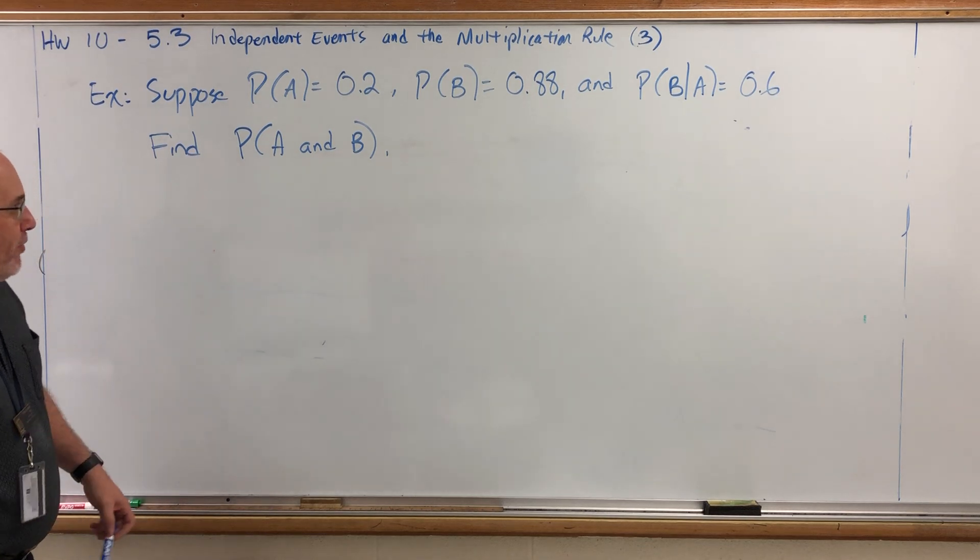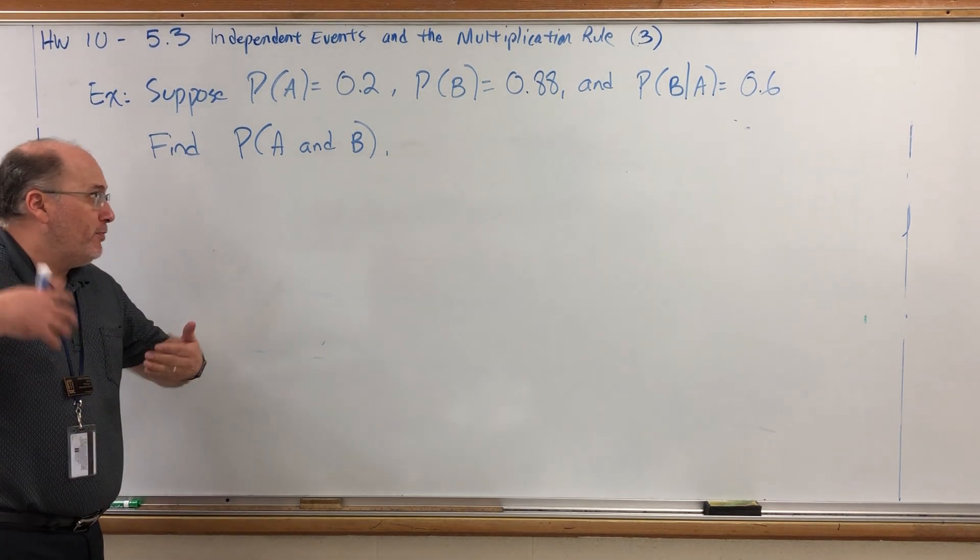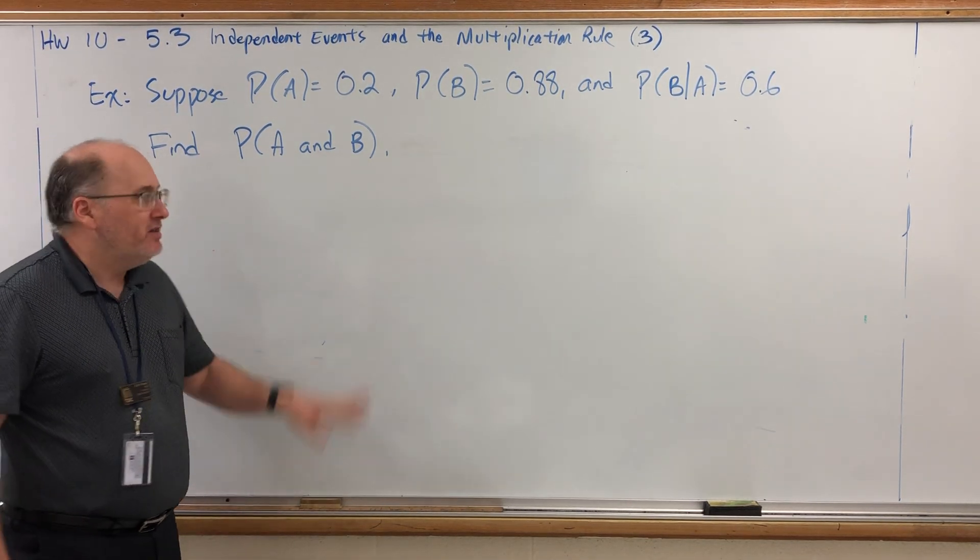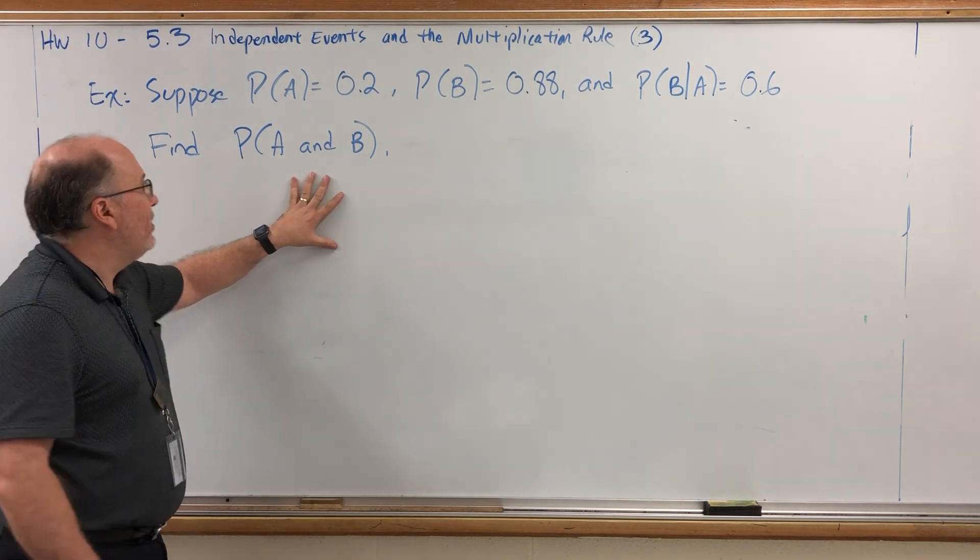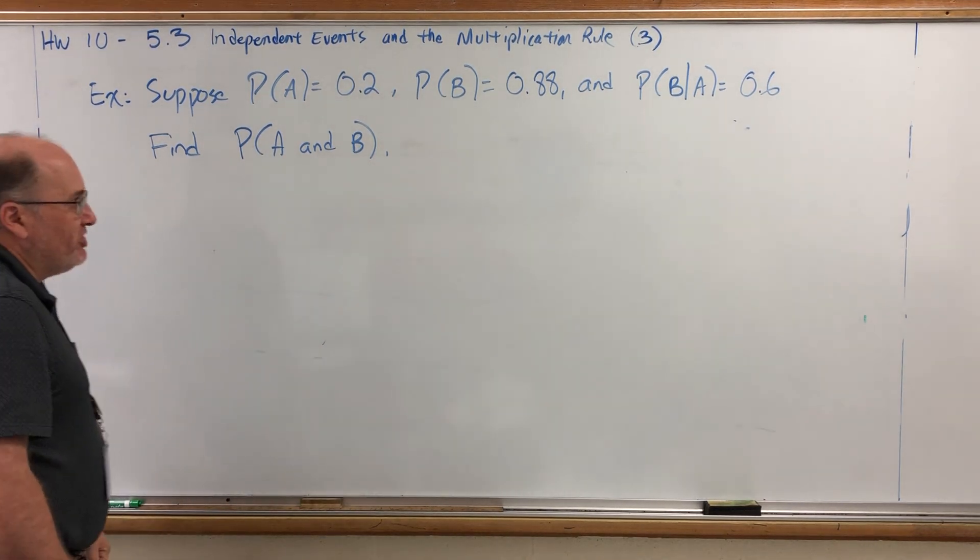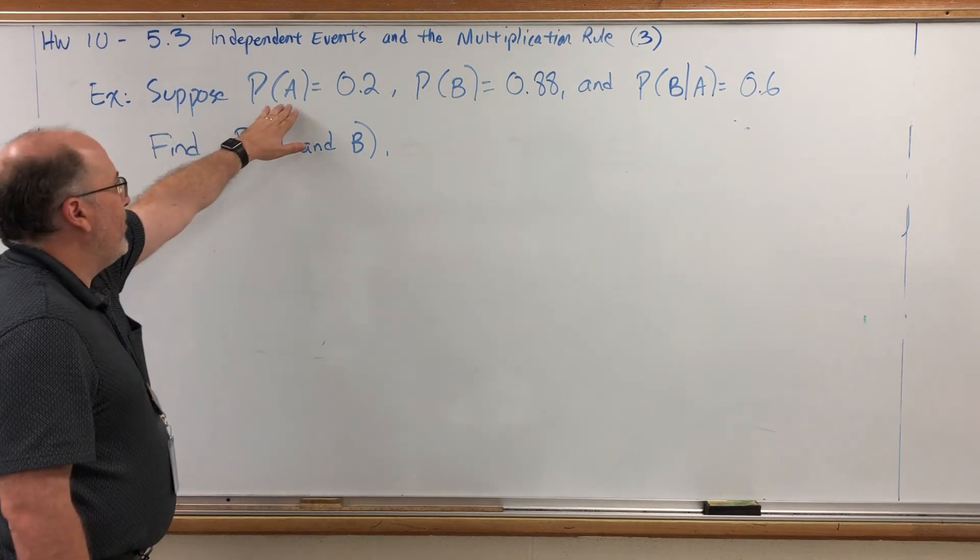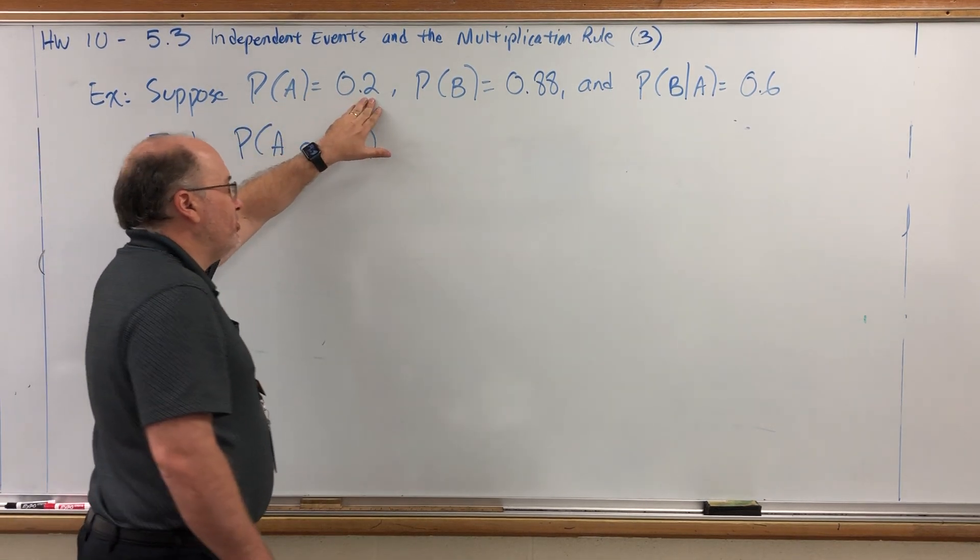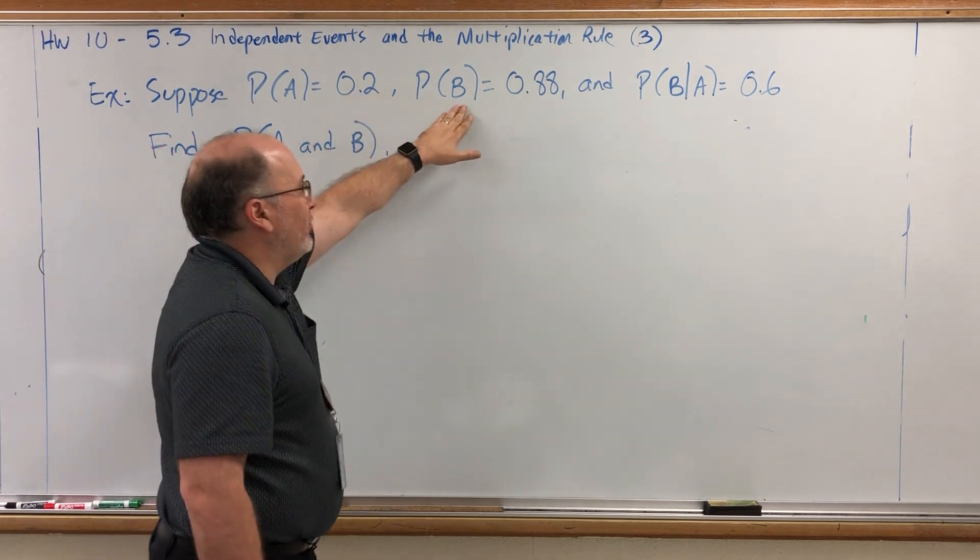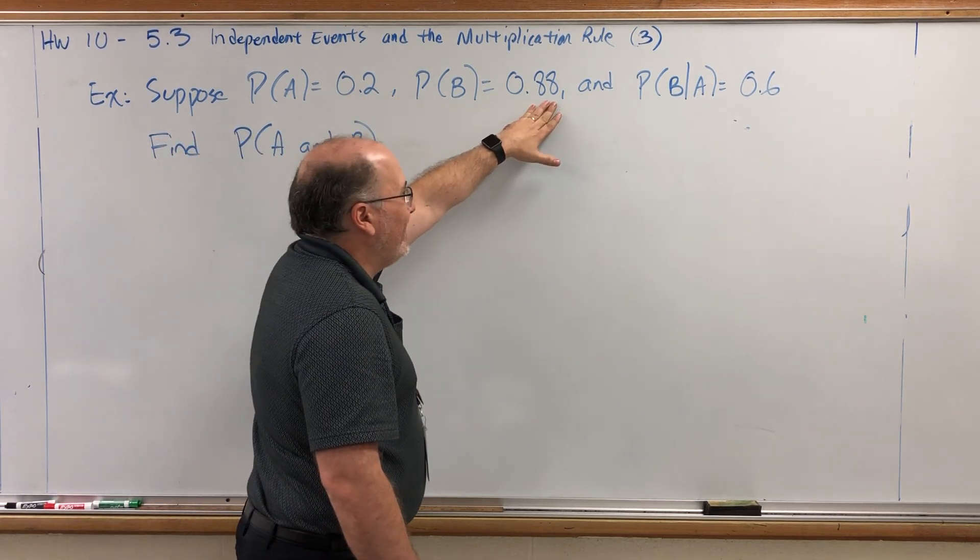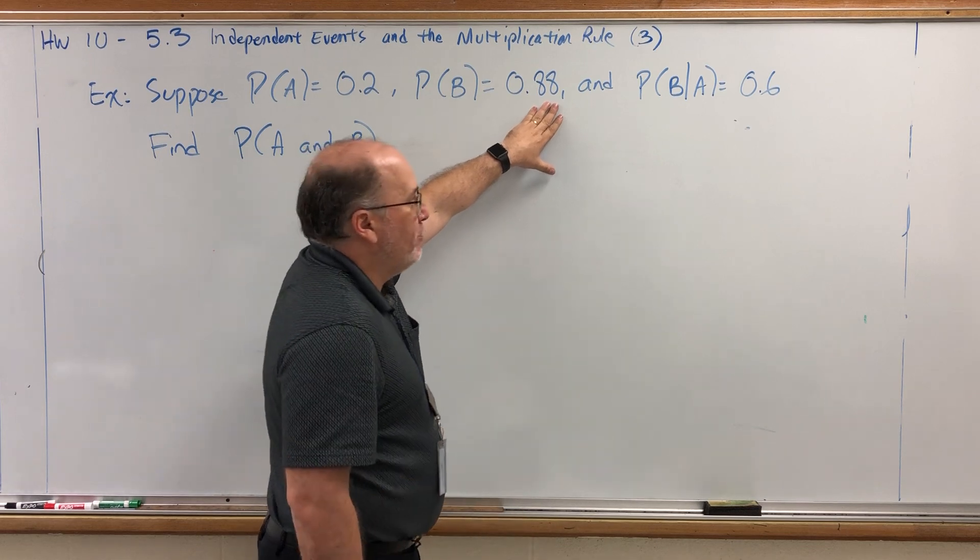In the previous video, we came up with a formula for finding the probability of A and B, a joint probability. In this example, which is taken from homework question number 1, we're given that the probability of A is 0.2 or 20%, the probability of B is 0.88 or 88%,